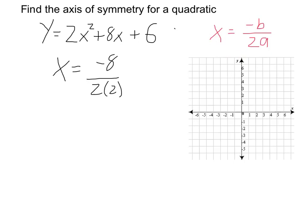So in this particular case, x is equal to negative 8 over 2 times a, which is 2, and can be simplified to negative 2. Therefore, our axis of symmetry is at negative 2.